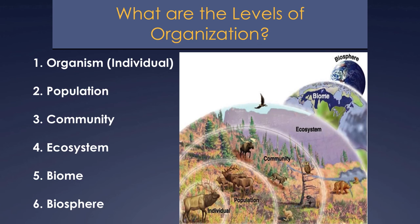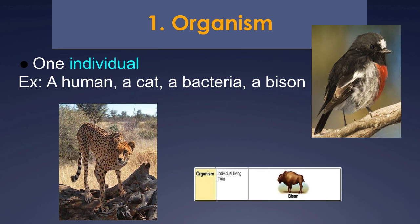The first grouping is an organism, and as you know, that's just one individual — one human being, one cat, one dog, one bison, one bacterium, one dragonfly, one bunny. Just one individual is an organism.